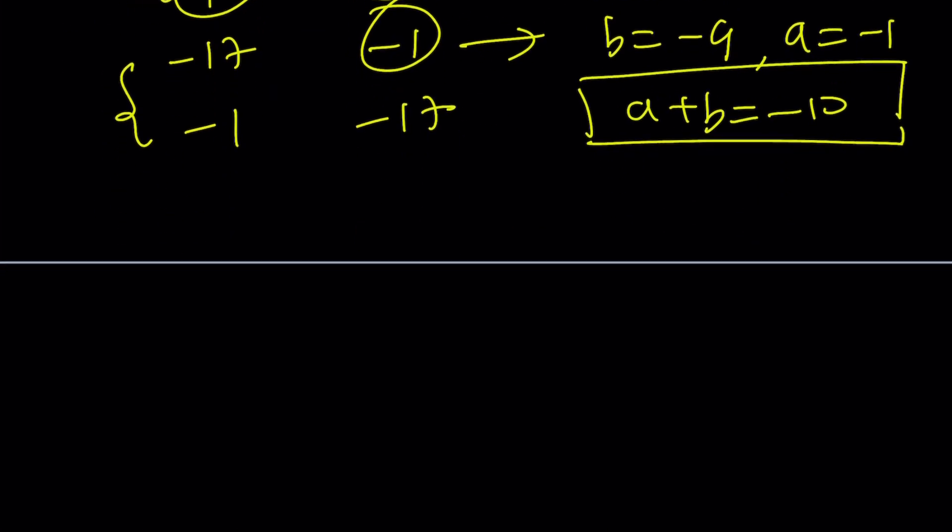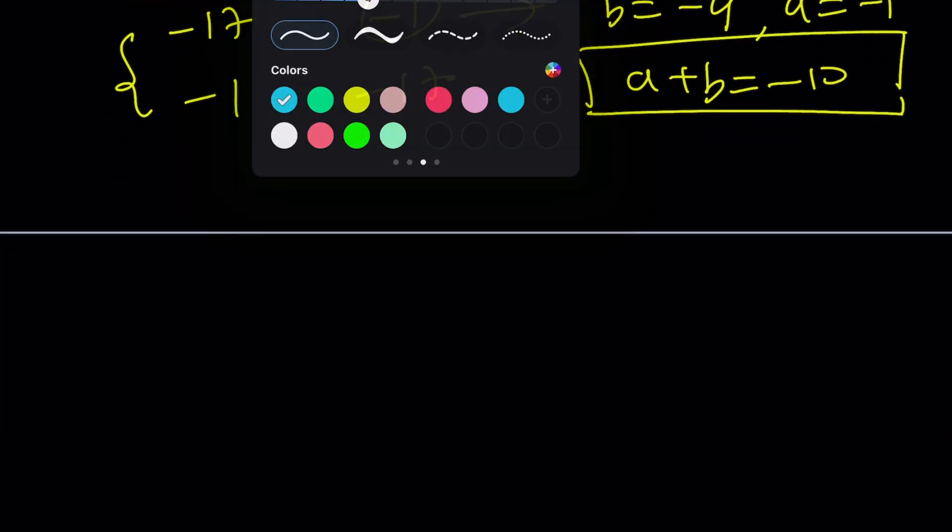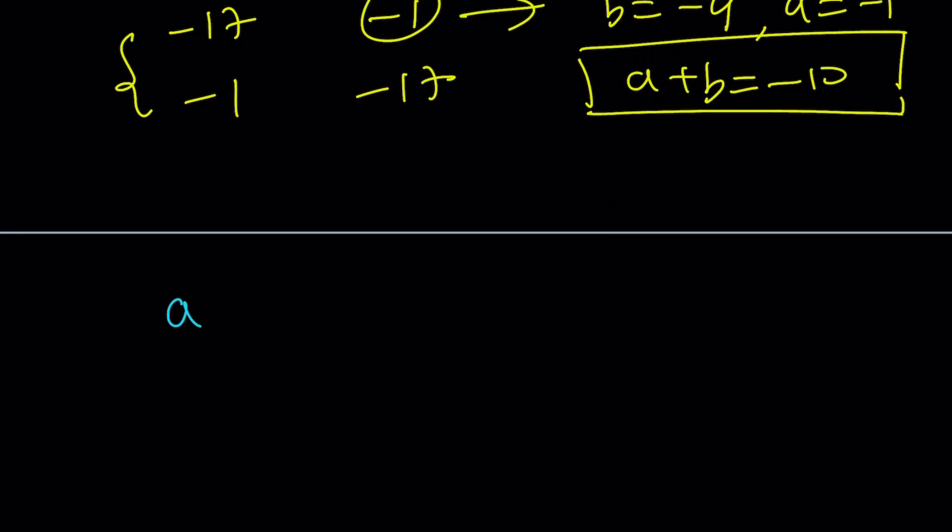So let's go ahead and take a look at an alternative way to solve this problem real quick, and then we'll finish up. So instead of dealing with fractions here, because we kind of had to take out a 2a, and then we had to deal with fractions, you could also do the following. You could multiply both sides by 2. That would give you 2a plus 4ab plus 2b equals 16.